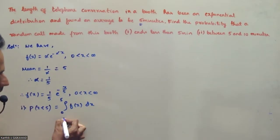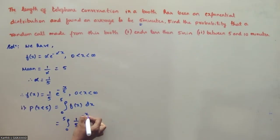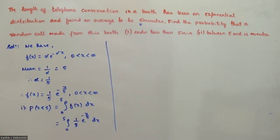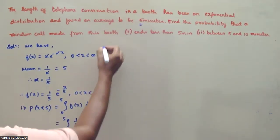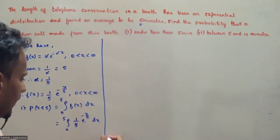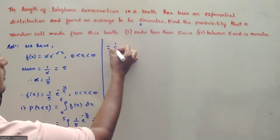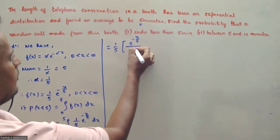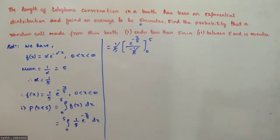P(X < 5) = integral from 0 to 5 of (1/5) * e^(−x/5) dx. The integration gives (1/5) * [e^(−x/5) / (−1/5)], evaluated from 0 to 5. The 1/5 terms cancel.